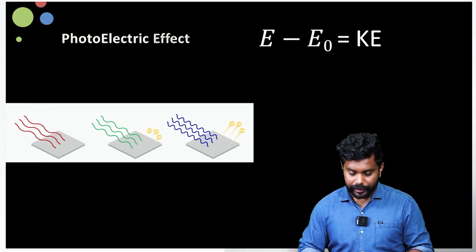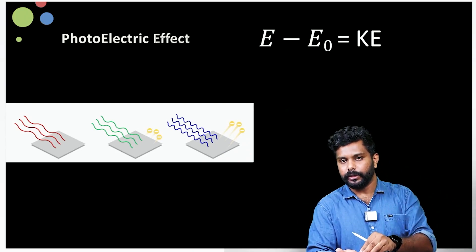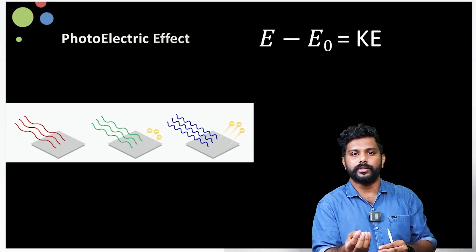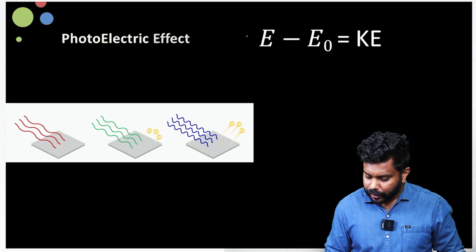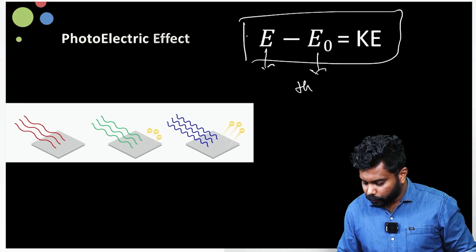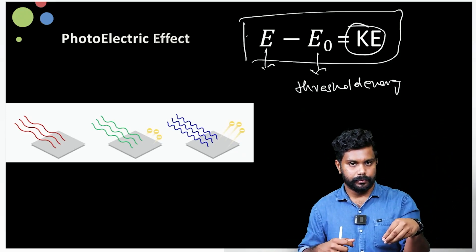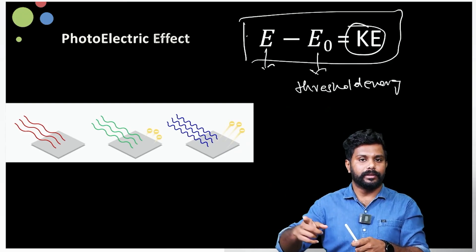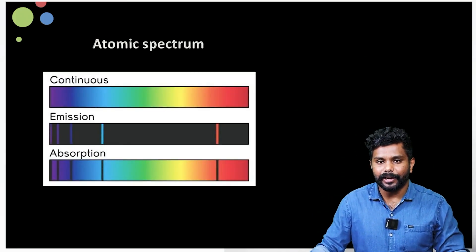Using Planck's theory, Einstein developed the photoelectric effect. He showed that when light is incident on a metal surface at a particular energy, electrons are ejected from it. The electron needs a specific minimum energy to emit from the metal surface — this is known as the threshold frequency. He made the equation: E − E₀ = KE, where E is the energy given by the light and E₀ is the threshold energy, and the difference equals the kinetic energy of the ejected electron.